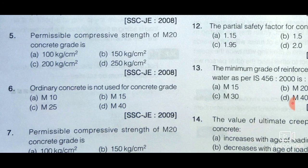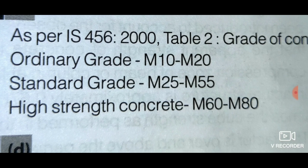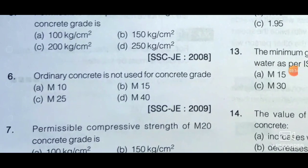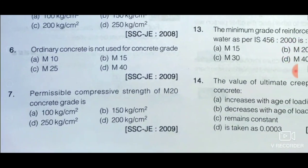Next question: Ordinary concrete is not used for concrete grade — option A: M10, option B: M15, option C: M25, and option D: M40. As per IS 456:2000, ordinary concrete covers M10 to M20, standard grade is M25 to M55, and high strength concrete is M60 to M80. Since ordinary grade is M10 to M20, option D (M40) is the correct answer as M40 is not an ordinary concrete.